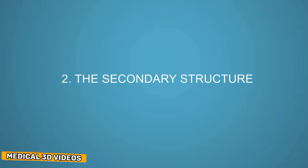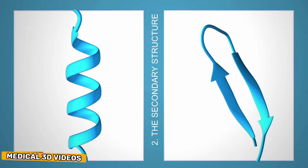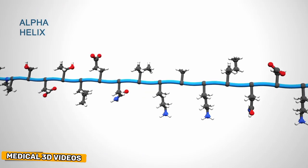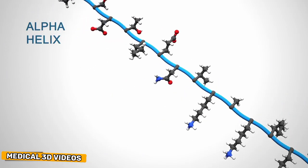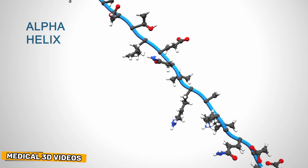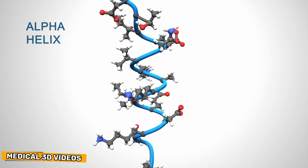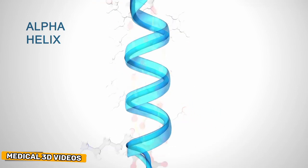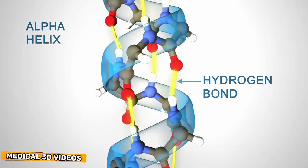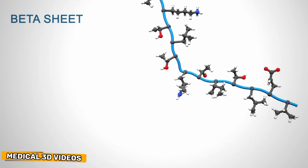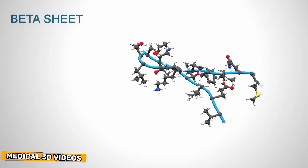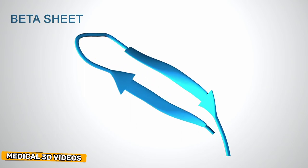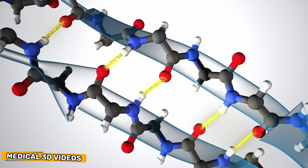Protein chains often fold into two types of secondary structures: alpha helices and beta sheets. An alpha helix is a right-handed coil stabilized by hydrogen bonds between the amine and carboxyl groups of nearby amino acids. Beta sheets are formed when hydrogen bonds stabilize two or more adjacent strands of amino acids.